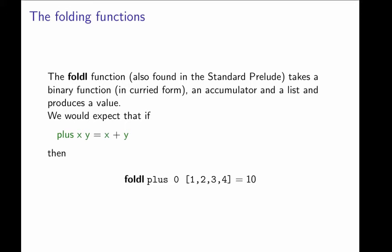Those are fold left and fold right, and first let's look at fold left. Fold left and fold right are functionals found in the standard prelude of Haskell. Fold left takes a binary function in curried form, an accumulator and a list, and produces a value.